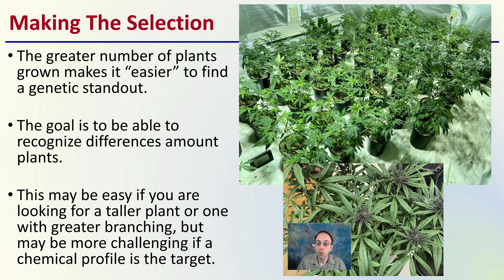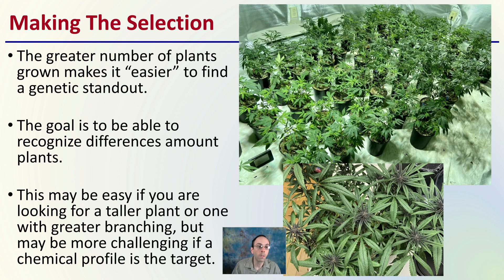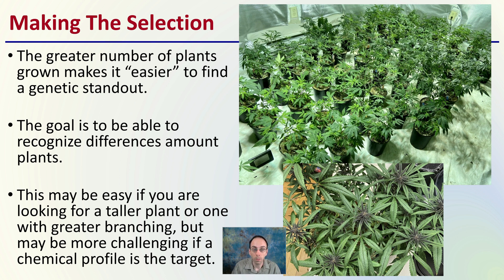When making that selection, the greater number of plants grown makes it easier to find the genetic standout. If you're growing two plants, it's going to be really hard to phenohunt. If you're growing 10, 100, 1,000, or 10,000, it's going to be much easier, because then you can likely see one that might be a true genetic standout.